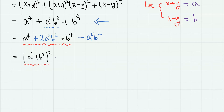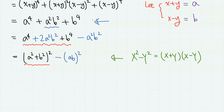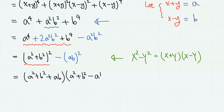Then we have minus a squared b squared, which is (ab) squared. So we can apply the difference of squares formula again. We have (a squared plus b squared plus ab) times (a squared plus b squared minus ab).